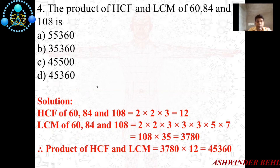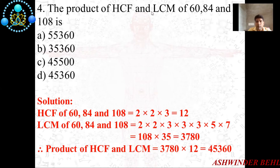The HCF of 60, 84, and 108 is 12 and the LCM of 60, 84, and 108 is 3780. The question asks for the product of HCF and LCM, so we multiply 12 × 3780 and we get 45,360. So D is the correct option.